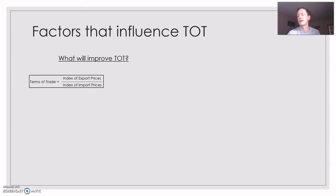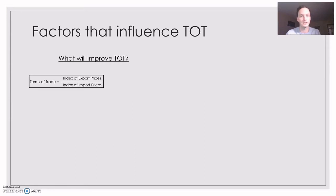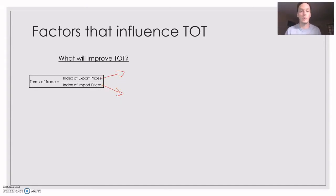So what will improve the terms of trade? It's either going to be export prices or import prices. Now for our terms of trade to increase — I'll put the formula here — I want you guys to pause the video and make a prediction. What has to happen to export prices or import prices for this number to go up?